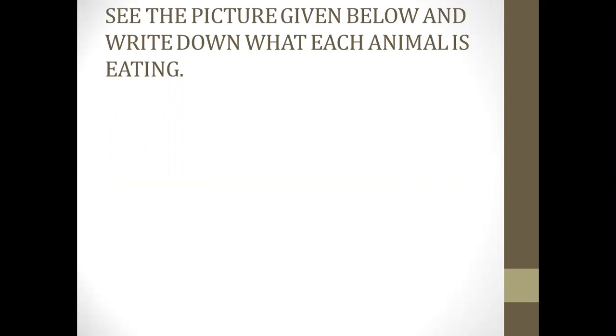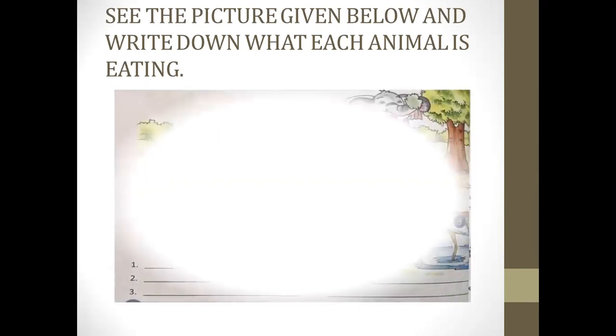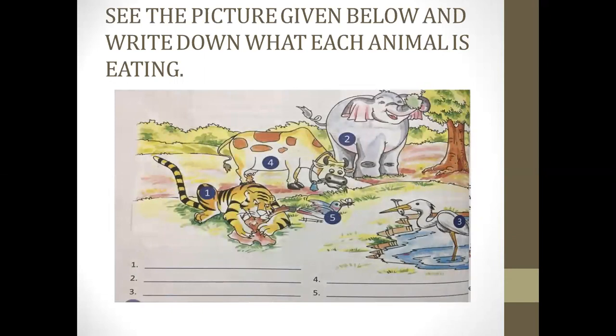See the picture given below and write down what each animal is eating. Now observe the picture carefully. How many animals are there? There are five animals, and they all are eating different foods. Observe them and write them in your notebook. What are they eating? Shall we move further? Alright.